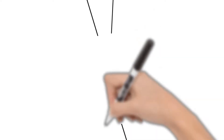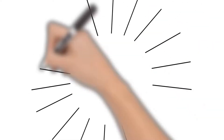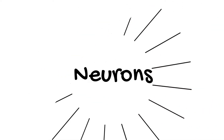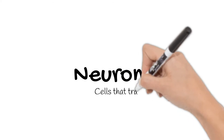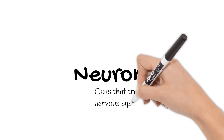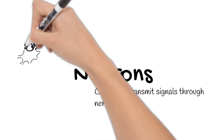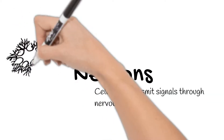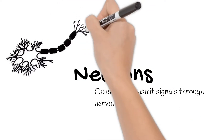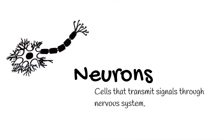Welcome back. Today we're going to take a closer look at neurons. Neurons are cells that transmit signals throughout your body's nervous system. There are billions of them passing messages all the time throughout your body.